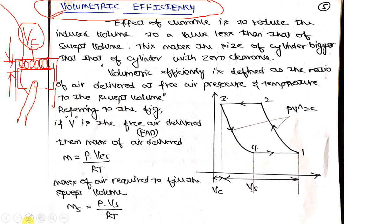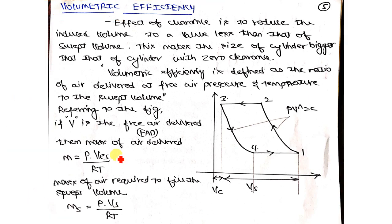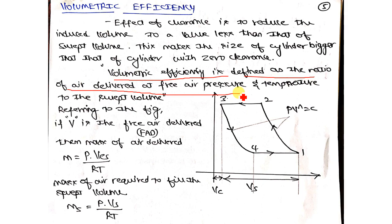What is volumetric efficiency? Volumetric efficiency is defined as the ratio of the volume of air delivered at the free air pressure — which is the suction pressure — to the swept volume. Whatever quantity of air is delivered at the free air pressure, its ratio with the swept volume is known as volumetric efficiency.